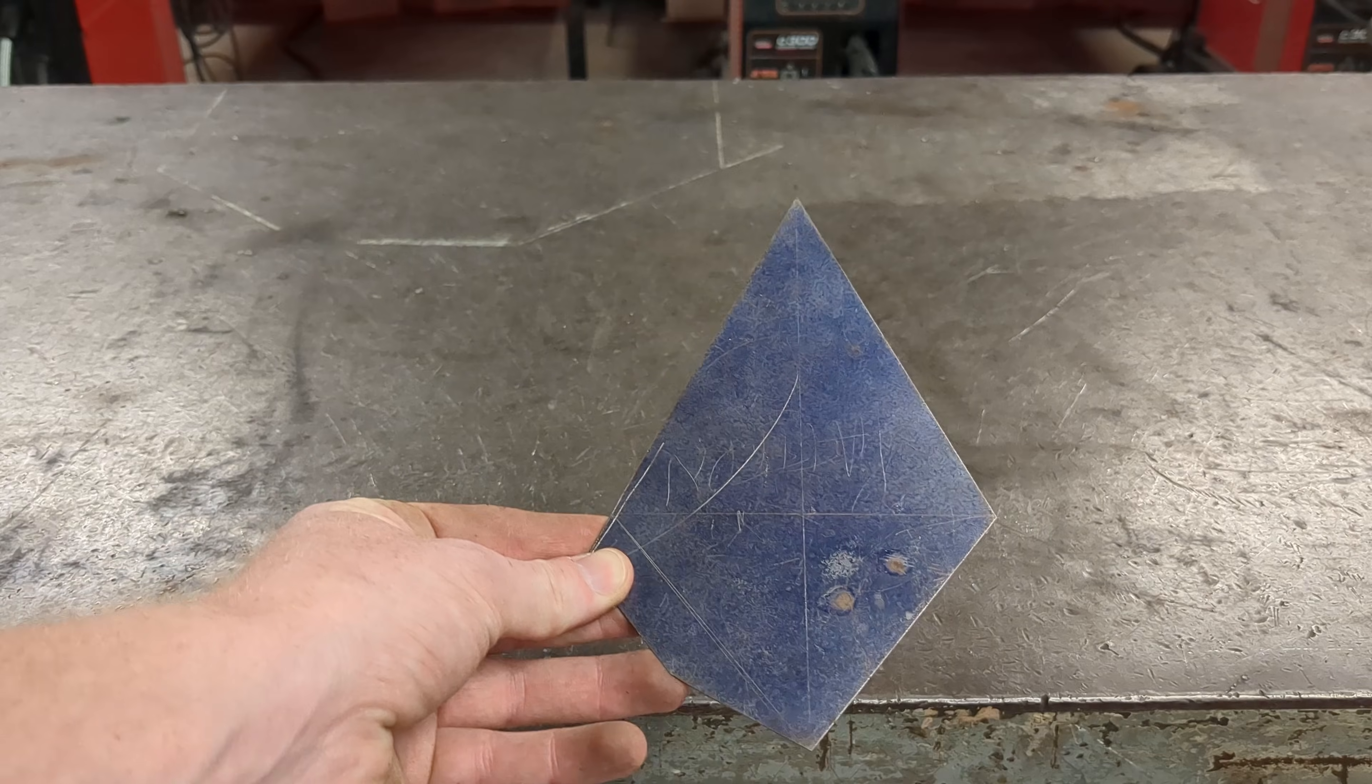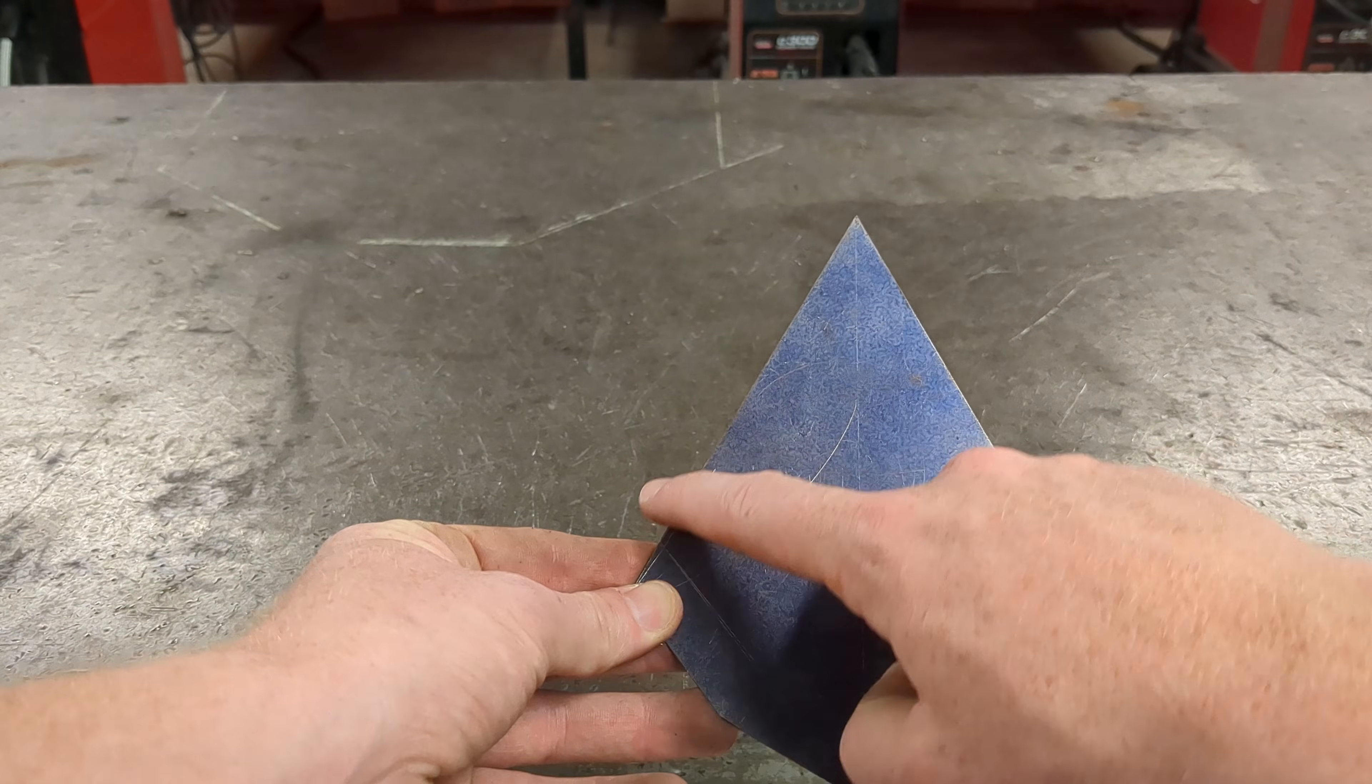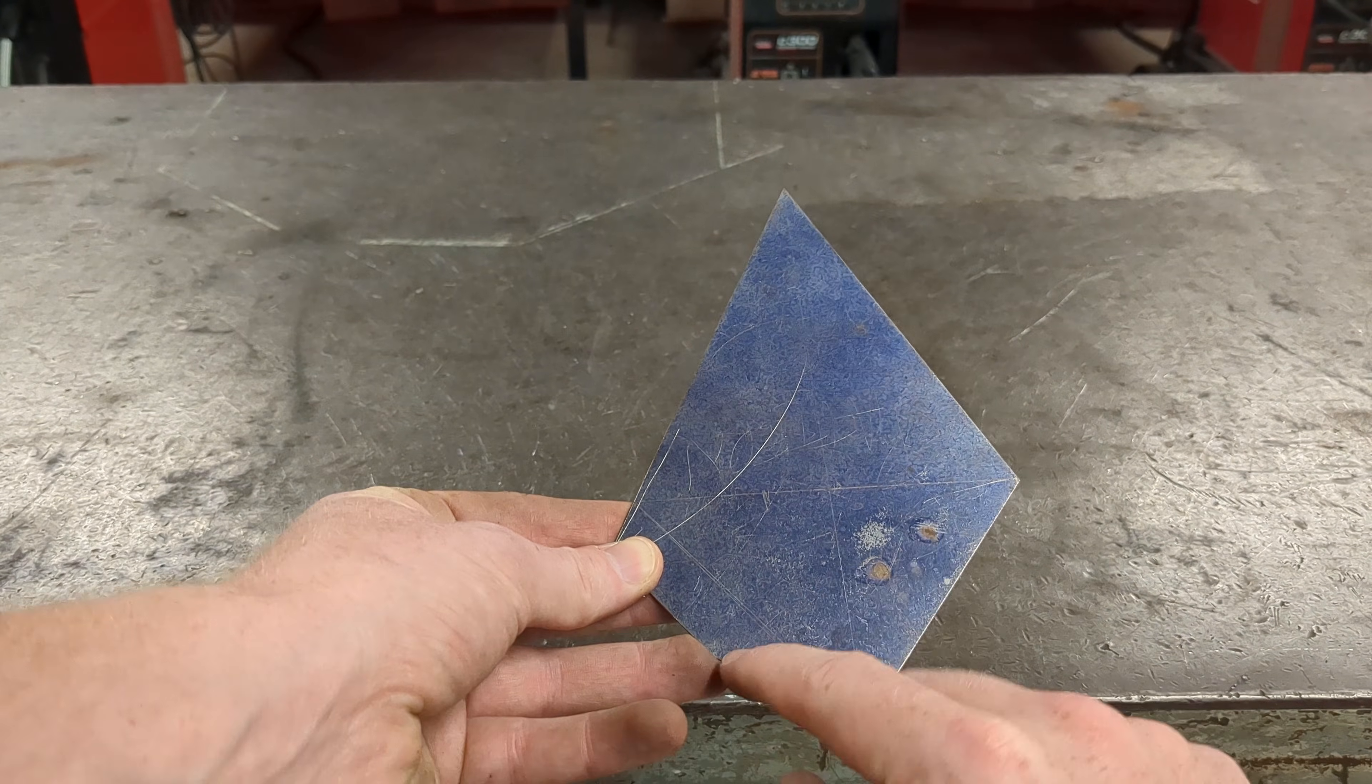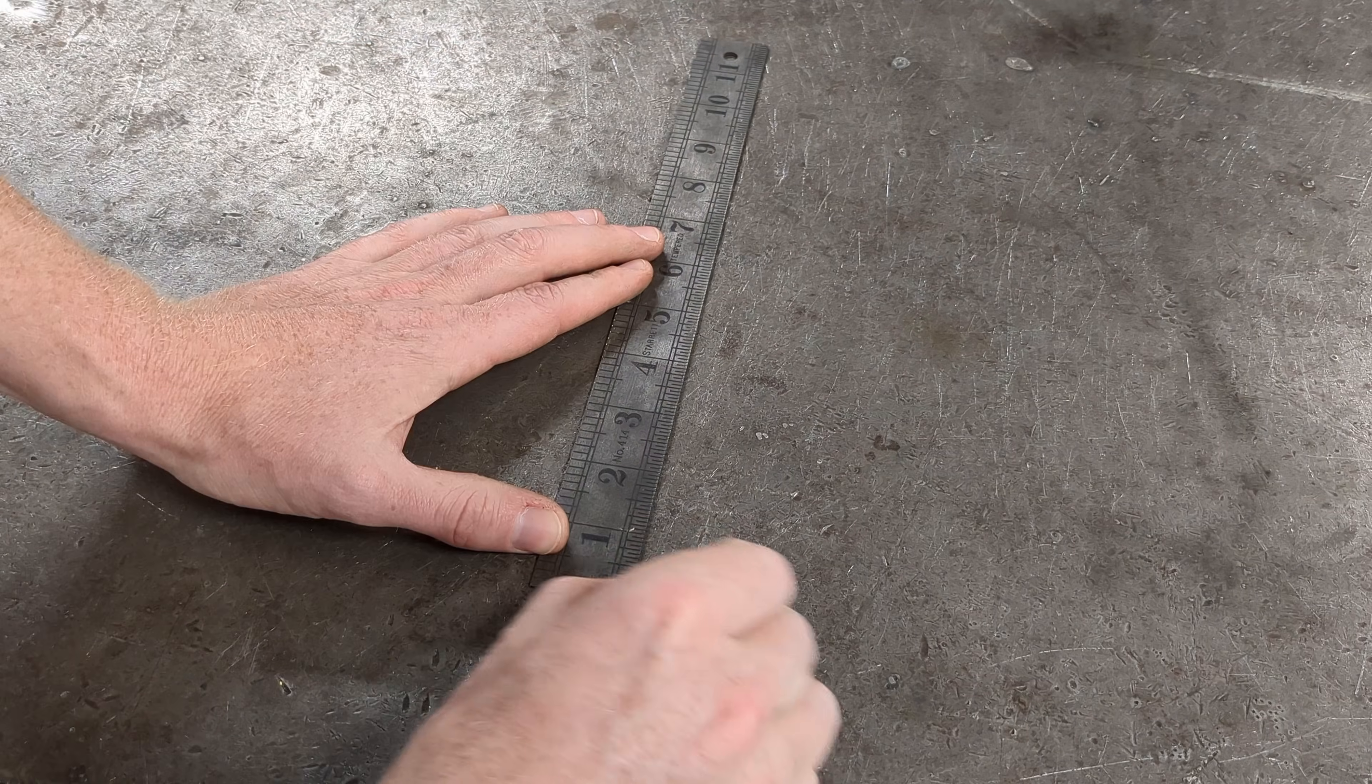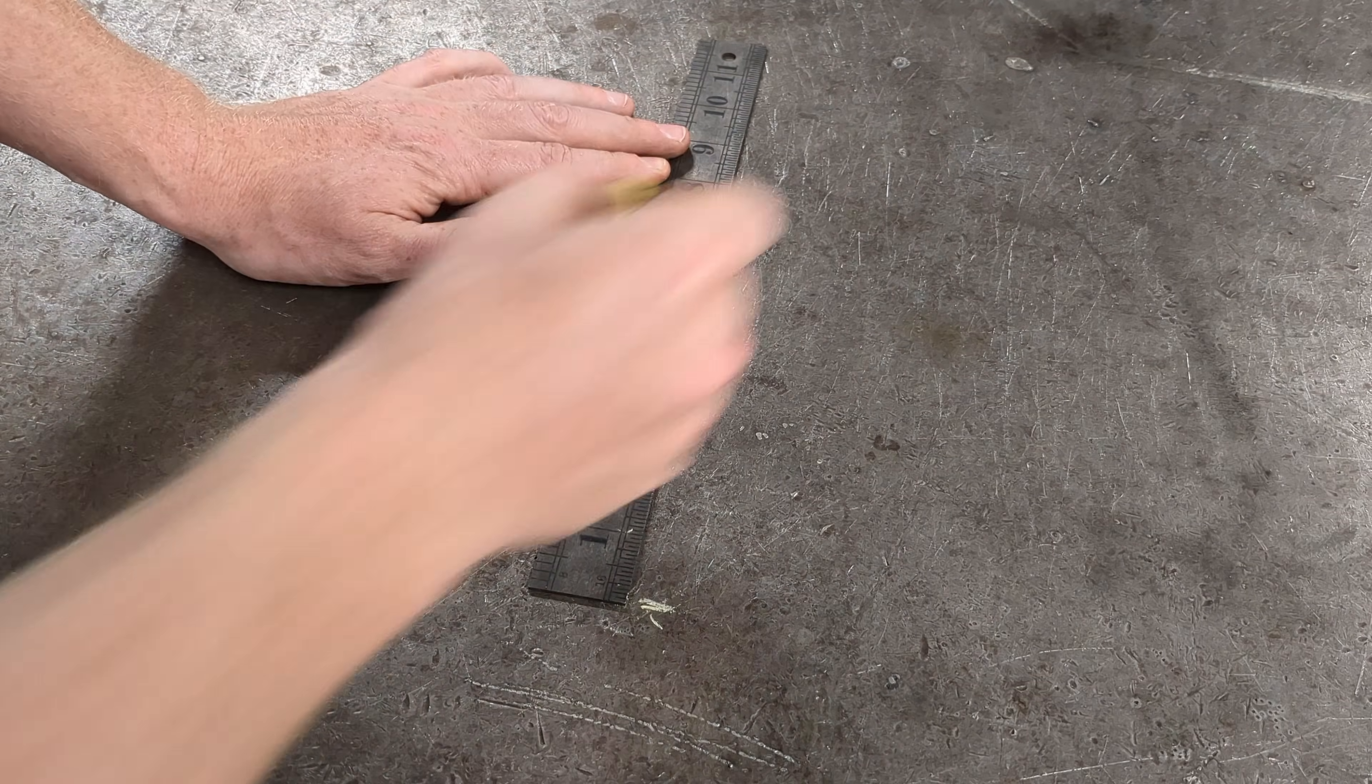To start, you're going to make this template that'll be each point of our star. It should have this diamond shape to it with a little extra material for a tab. If you don't want to make your own template, you can find the link to the one I use in my classes in the description below.